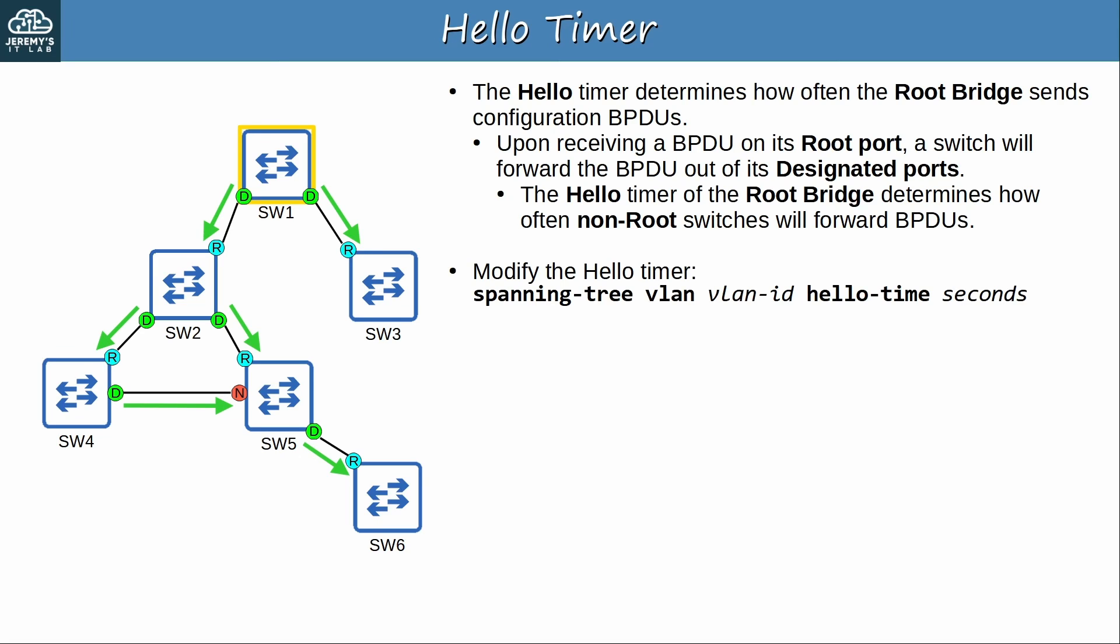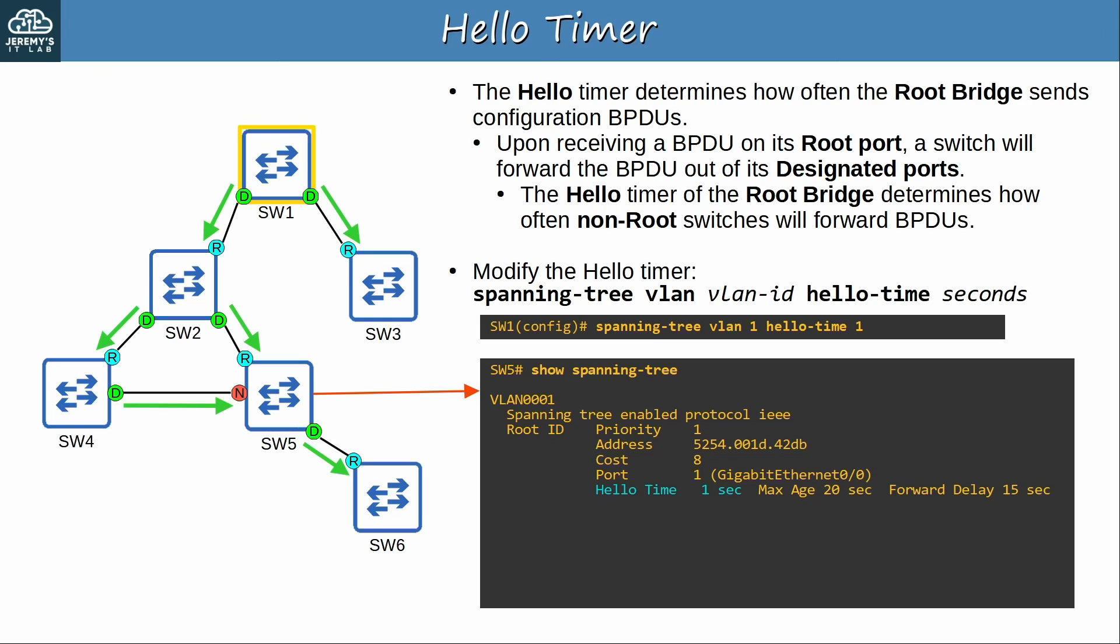To modify the hello timer, use the spanning tree VLAN hello time command, specifying the hello timer in seconds. The configurable range is 1 second to 10 seconds. So if I use this command on switch 1, it will send BPDUs every second, instead of every 2 seconds. After issuing that command, I used show spanning tree on switch 5, and in the root bridge section of the output you can see the new hello timer of 1 second. However, under the section containing switch 5's own information, it still says 2 seconds. Switch 5's own hello timer won't actually take effect though, it only matters if switch 5 is the root bridge. Because the root bridge, switch 1, sends BPDUs every second, switch 5 will forward them every second, after it receives them.